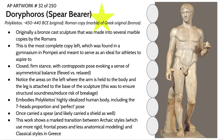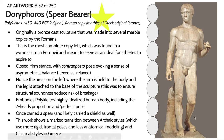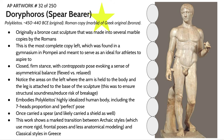The Doryphoros embodies Polycletos' highly idealized human body, including this canonized seven heads proportion — he is exactly seven heads tall. He once carried a spear and probably a shield on his right arm; the spear was probably made of metal, which is why it has since been lost. This work is really showing a marked transition between the Archaic styles, which use these more rigid frontal poses and less anatomical modeling, to these Classical styles that we in the modern era associate pretty strongly with ancient Greece.